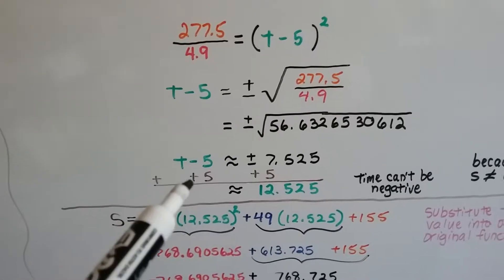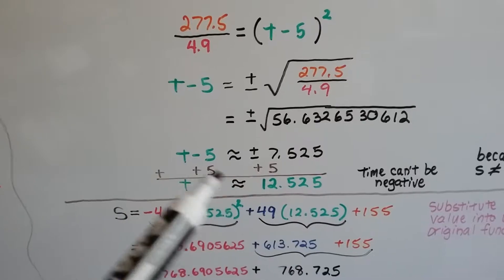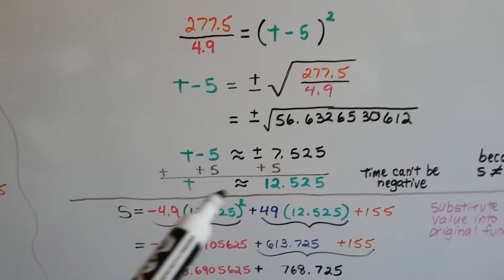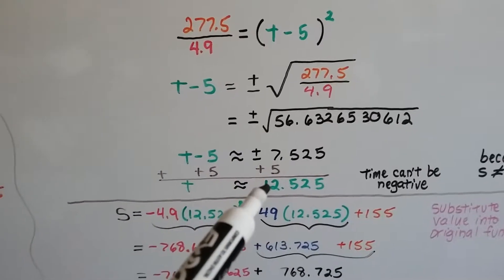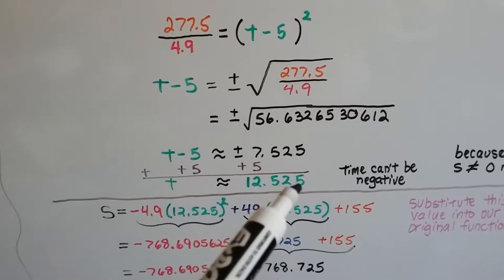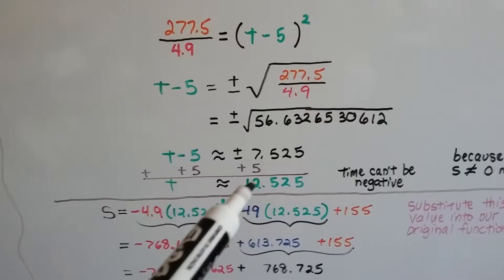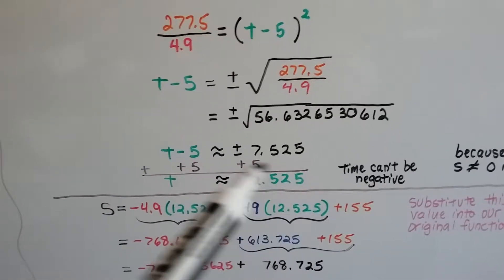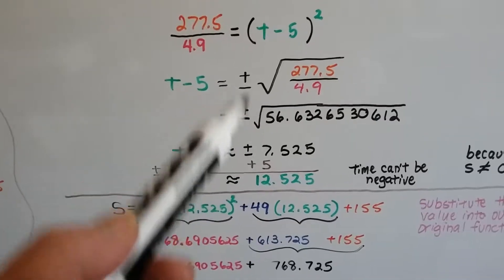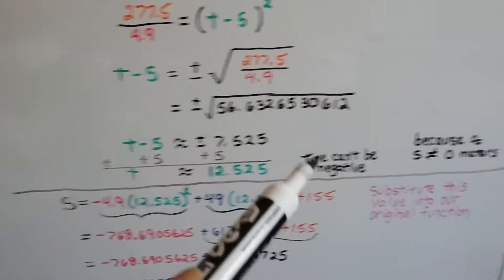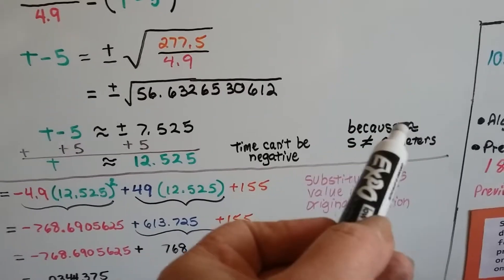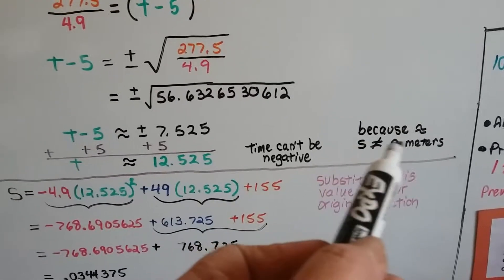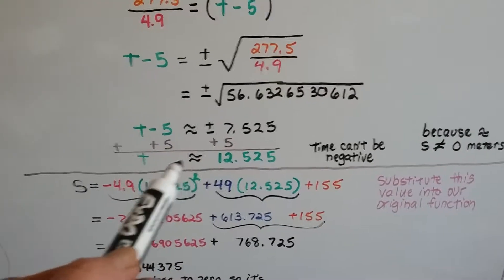We need to isolate t. We're going to add a 5 to each side of the equation. That's going to give us t is approximately a positive 12.525, because time can't be negative. So we can't use the negative here. It's going to be a positive. And because it's approximate, that s does not equal 0 meters.